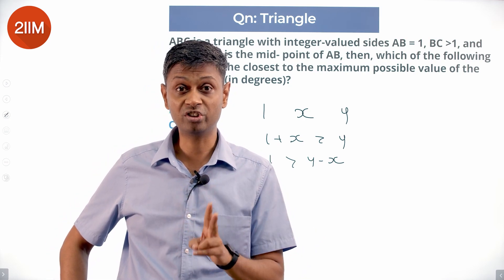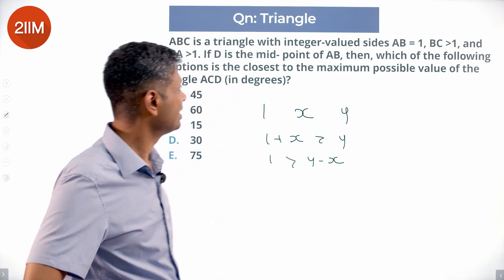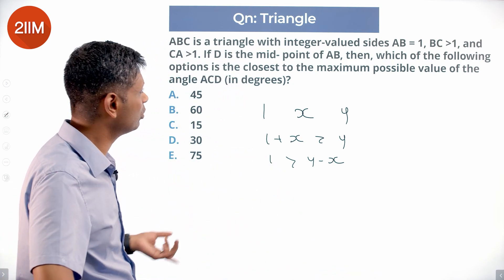If one of the sides is one and the other two are integers, it has to be an isosceles triangle. So straight away we know that BC is equal to CA.